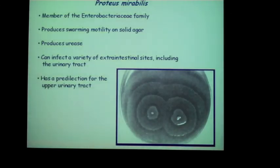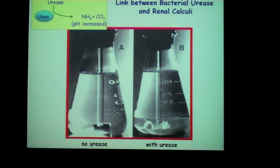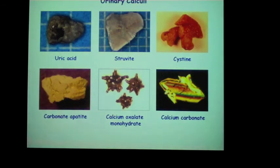Proteus mirabilis also produces urease, which is another virulence factor. A photo shows two flasks of synthetic urine — one without purified urease and one with it. When urease is added, the pH rises because urease breaks down urea to ammonia and CO2, causing precipitation of minerals in the urine and a strong association with kidney stone formation. Proteus mirabilis is therefore a major cause of complicated UTI and pyelonephritis in catheterized patients, and is also highly associated with kidney stones.